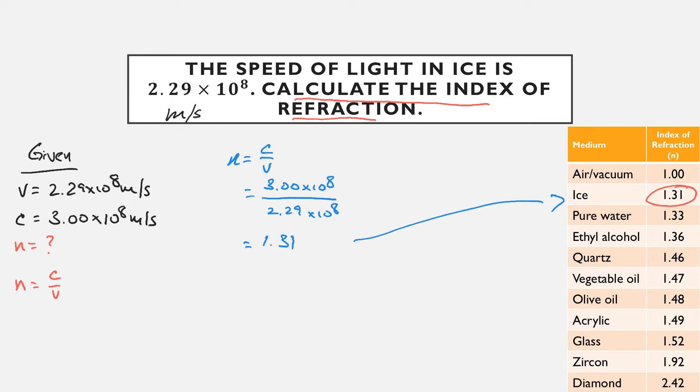Because this is a word problem, you should always finish off with a word answer. So therefore, the index of refraction of ice is 1.31. And just note that that is dimensionless. There's no units for index of refraction. It's like a ratio, so there's no value in terms of meters or seconds.